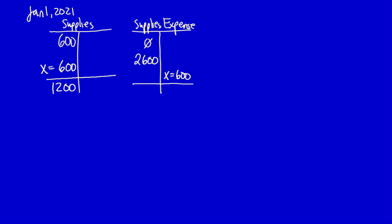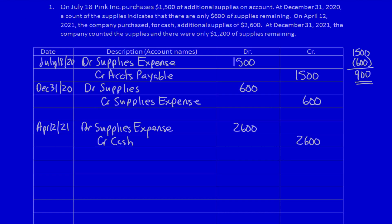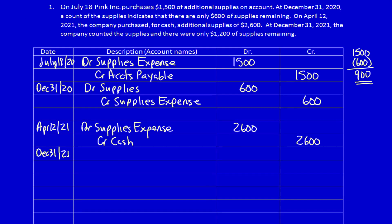Therefore, how much have I used or consumed during the period? I've used or consumed $2,000 worth of supplies, and I have $1,200 of supplies remaining on my statement of financial position because they have not been used or consumed yet. My adjusting entry at the end of the period is to debit supplies and credit supplies expense. The adjusting entry at December 31st, 2021 is debit supplies $600, credit supplies expense $600. I am removing from the income statement the supplies that have not yet been used or consumed and placing them on the statement of financial position to recognize their future economic benefit.